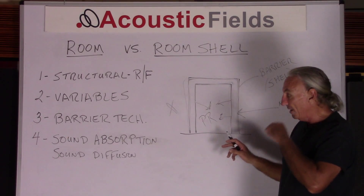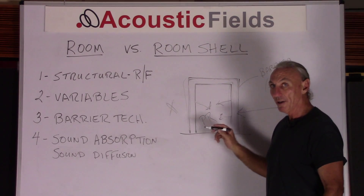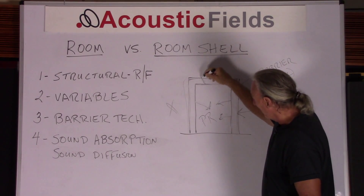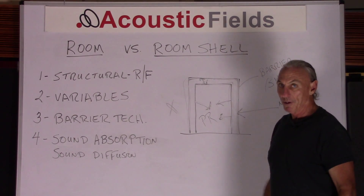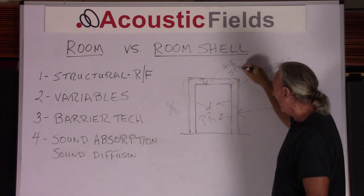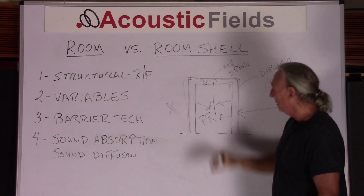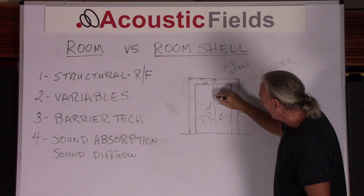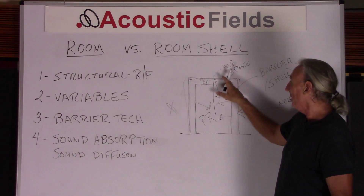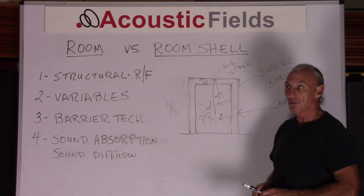Another thing you have to realize when you build your room within a room is that there's a relationship between the shell and the room. There's an air space between them — some kind of space — and that all has to be calculated. Energy from the room will leave and strike the shell and then come back in. So there is a flexibility-rigidity ratio that you have to maintain between the shell and the room construction in an ideal situation.